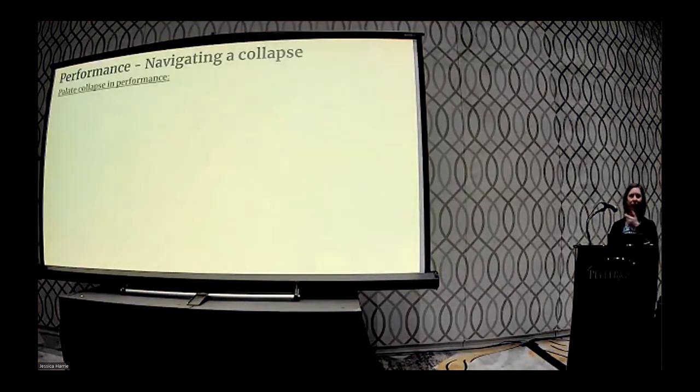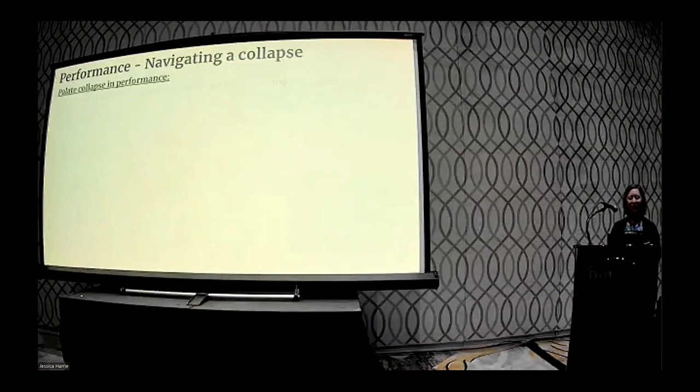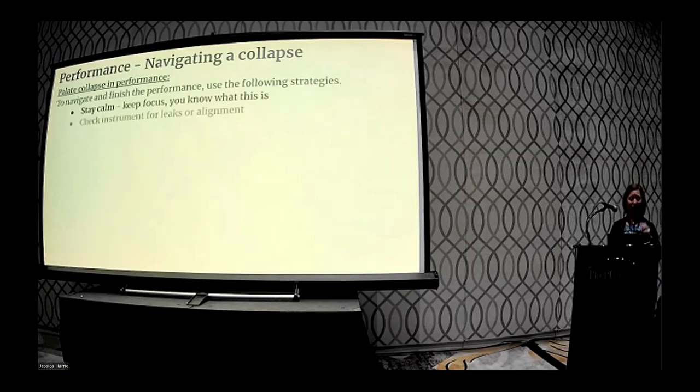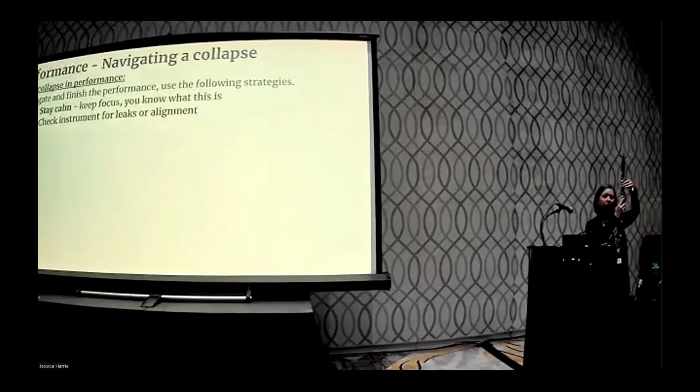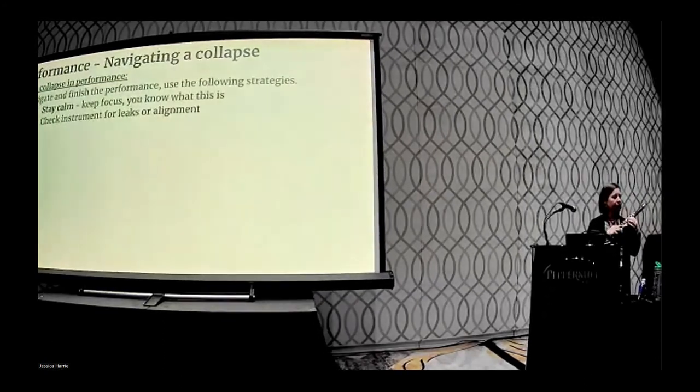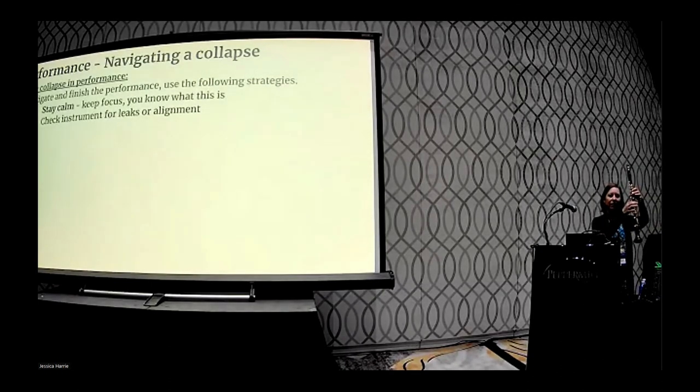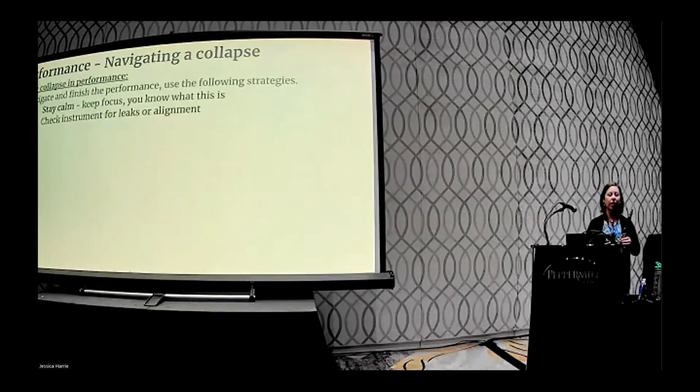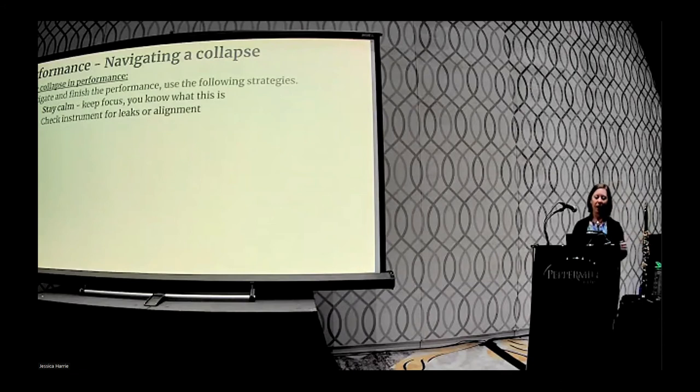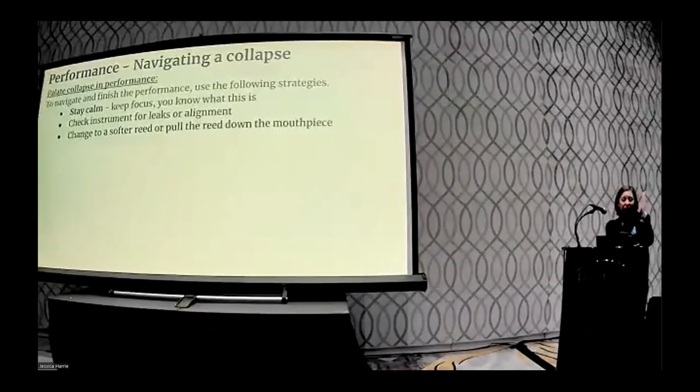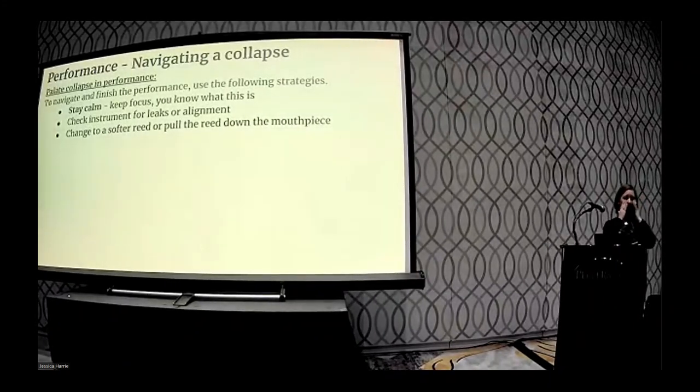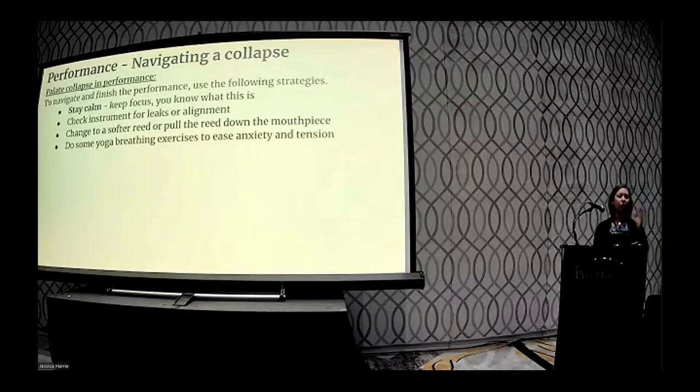In performance, if it happens, what do you do? Like, I wish I'd known this when that would happen to me. Finish, if you want to finish the performance, you're going to have to pace yourself. But stay calm. You know what this is now. Unlike me, you know what this is. Check your instrument for leaks. You can take your clarinet and hold down a one-and-one and tap that closed pad right below your index finger. If that wobbles, your clarinet's leaking. Okay? You could also hold down a D and tap the rings on the bottom hand. If you feel a wobble underneath, your clarinet's probably leaking. So make sure that those things aren't happening. And you can do that in rests while you're playing. Or while you adjust. So that's a quick one. Change to a softer reed or pull the reed down the mouthpiece. Just ever so slightly because that will make it a little bit softer. Typically, when the palate's fatigued, going to a softer reed will help. Do some yoga breathing exercises, whether it's between pieces backstage or in rests. Just relax.